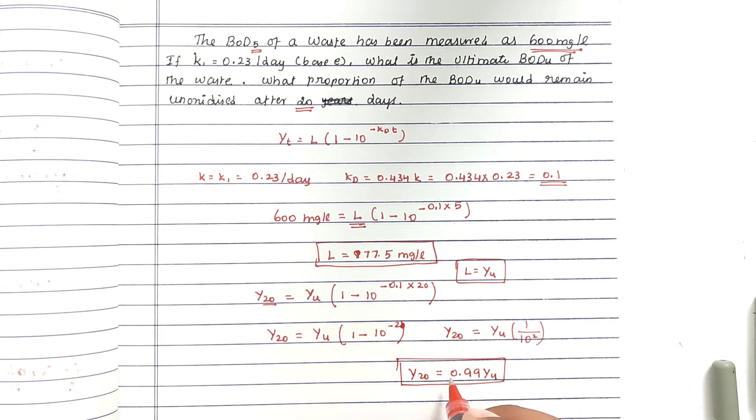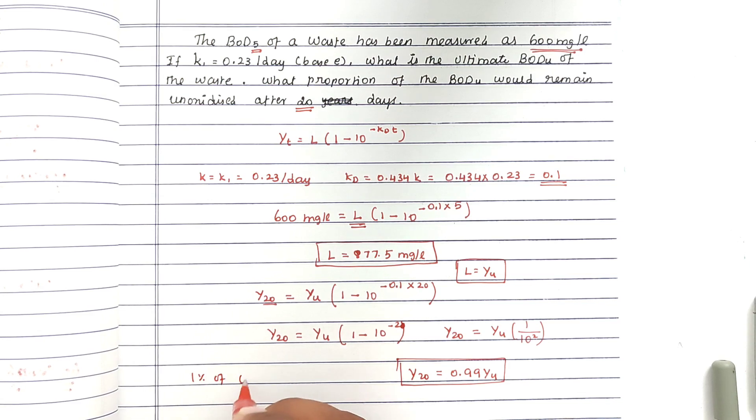From that we can find out 99 percent of BOD is utilized in 20 days. Only 1 percent of ultimate BOD is left unoxidized after 20 days. This is the method we can solve the problem. See you in the next video. Thank you.